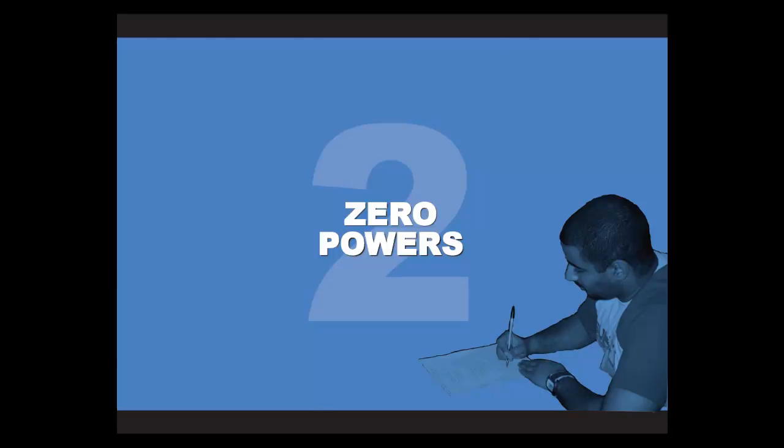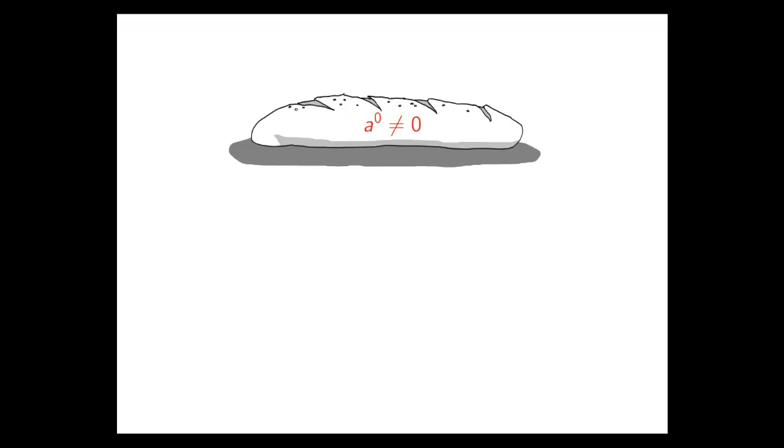Item number 2 out of our baker's dozen is what happens when you have a power of 0. Quite often I see people interpreting any number, a raised to the power of 0, as equaling 0. Now this isn't true, but it's a natural mistake to make.